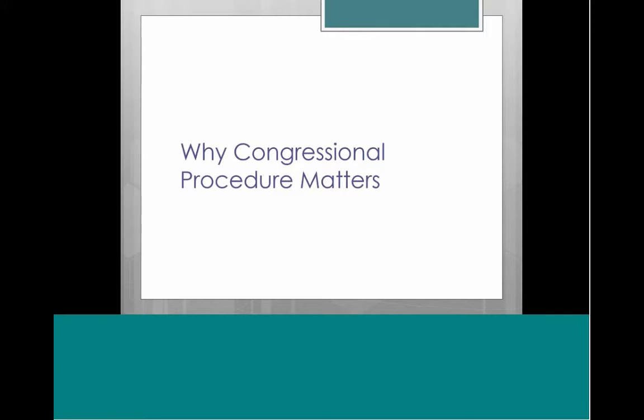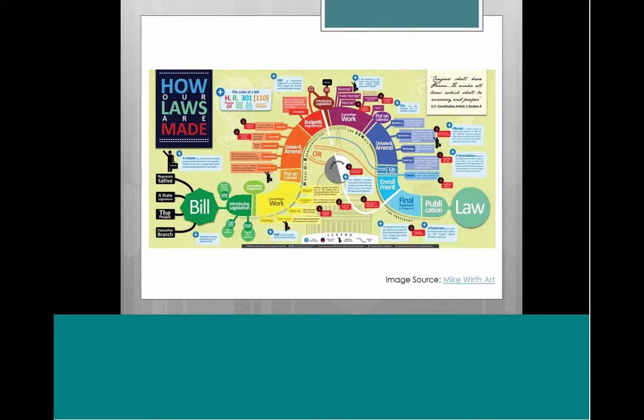So why do we care about this topic? Not only we as librarians and researchers, but also as citizens — I think this is an important topic to be aware of. The main reason it's important, especially for us as librarians trying to help our patrons find congressional information, is that these rules guide the process for how laws are made.